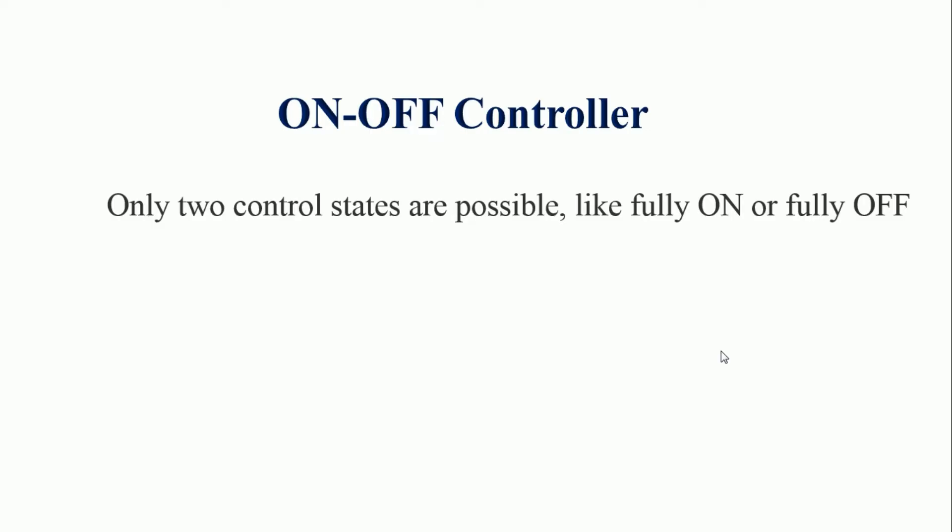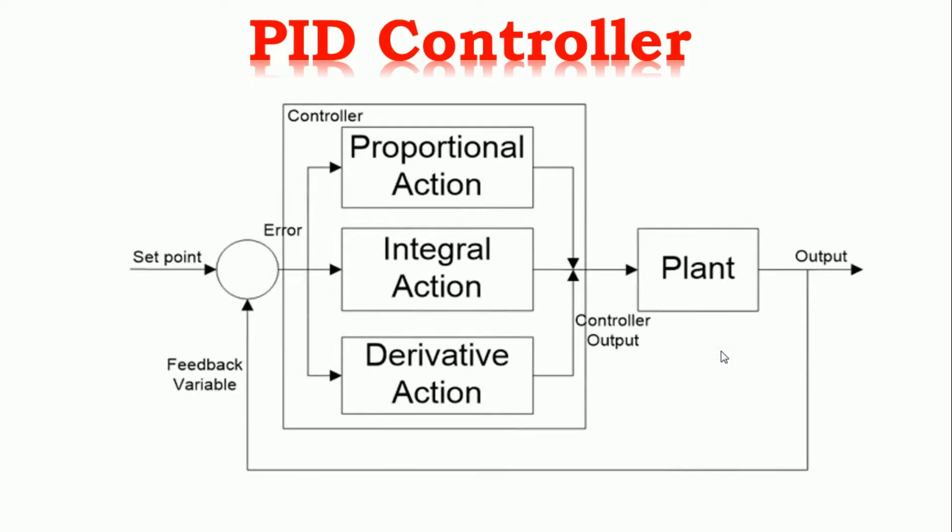PID controller maintains the output such that there is zero error between process variable and set point or desired output by closed loop operations. PID control is still widely used in industry because of its simplicity. No need for a plant model, no design to be performed. PID uses three basic control behaviors that are proportional, integral and derivative controller.